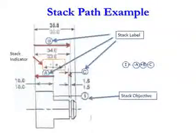Start with the example. The stack labels here shown A, B, C. A stack indicator with a sign - positive and negative. And stack objective is marked here. Here we have to find out the maximum minimum distance.